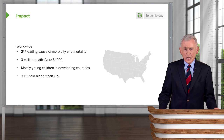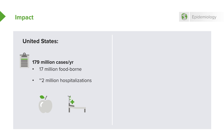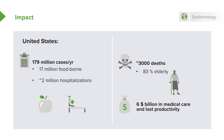Diarrhea is a thousand-fold higher in developing countries than in the United States. But it still is a problem in the US, with 179 million cases a year, 17 million of which are foodborne. About 2 million of those instances require hospitalization. 3,000 deaths is a sizable amount, and most of the deaths occur among elderly persons. The cost tallies to 6 billion dollars in medical care and lost productivity every year.